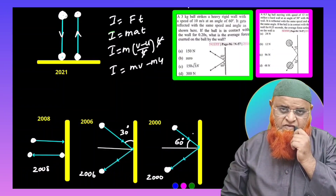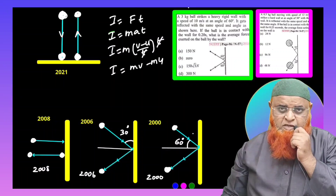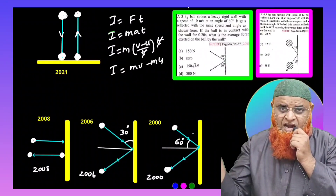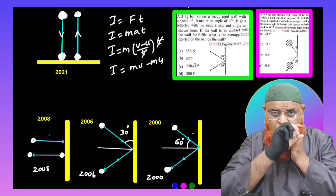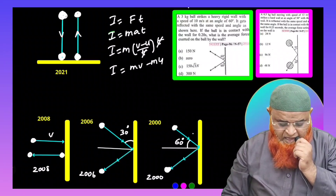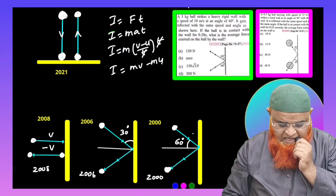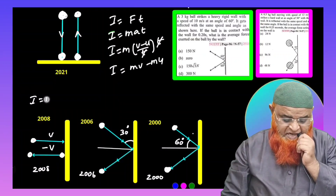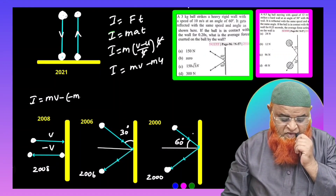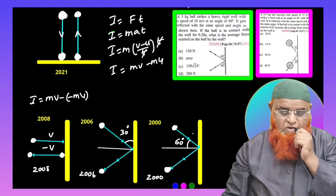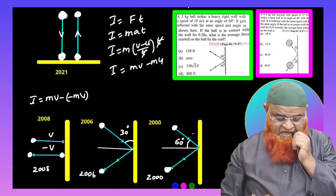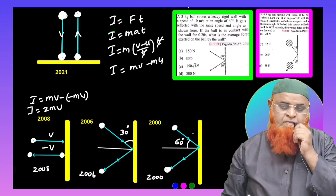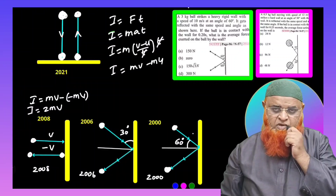The first case is from 2008: a ball falls normal to the wall and reflects back. While moving towards the wall the velocity is V, while returning it is minus V. Therefore, impulse = M × V − (−M × V) = 2MV. This was the first problem asked in 2008.